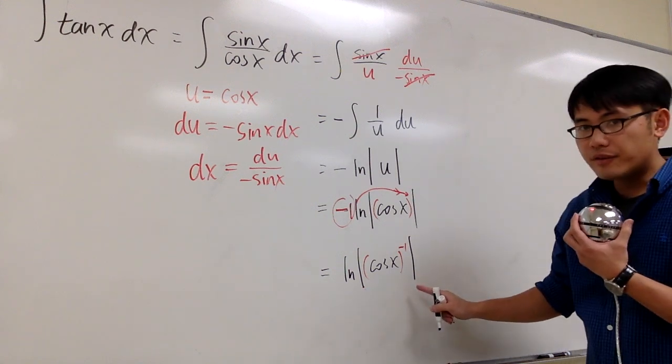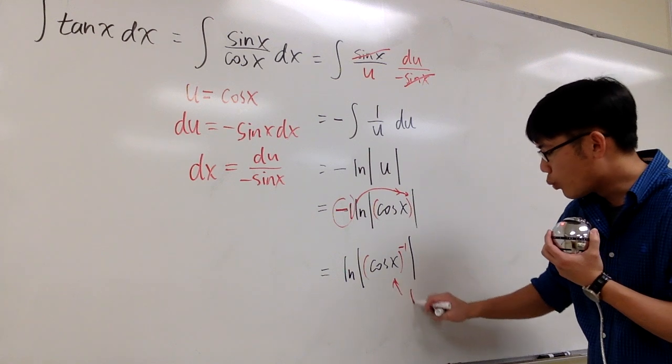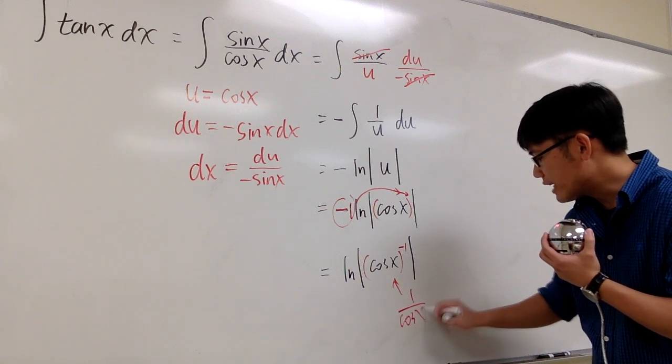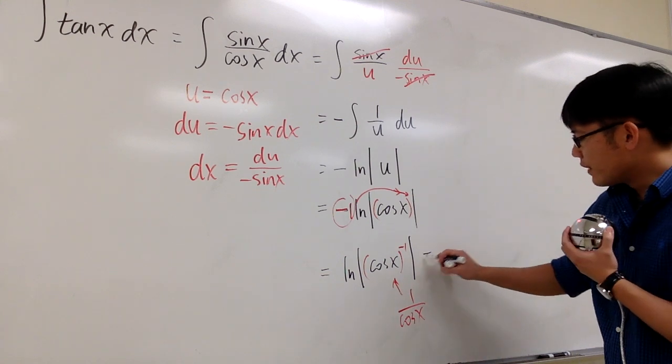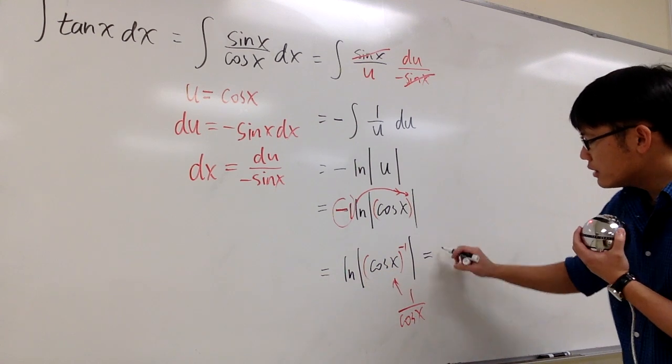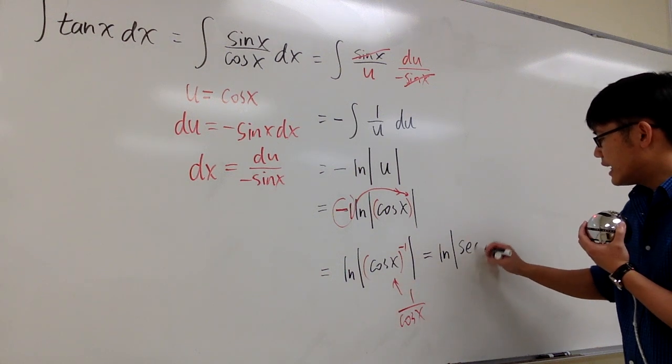This is not the inverse cosine. This means cos x to the negative 1 power, which is the same as saying 1 over cos x. And what's 1 over cos x? It's secant x. So finally, we can say this is ln absolute value, and inside we just have secant x.